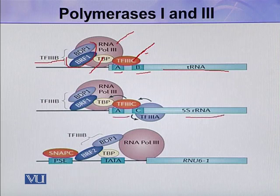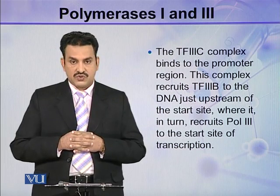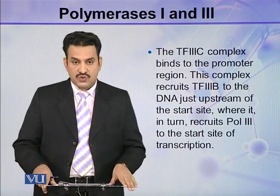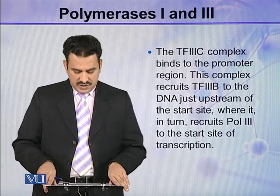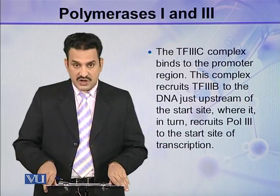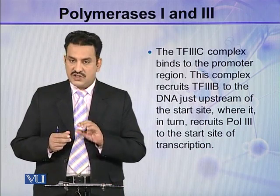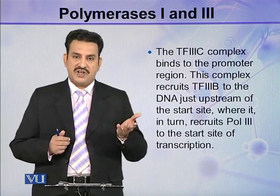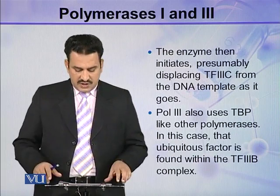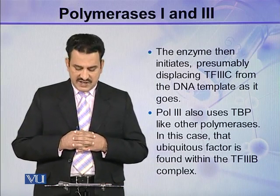In the case of the 5S rRNA gene, the promoter contains box A and box C, while in some other cases a TATA box and PSE box are also present. The TF3C complex binds to the promoter region; this complex recruits TF3B to the DNA just upstream of the start site, which in turn recruits polymerase 3 to the start site of transcription. The enzyme then initiates transcription, presumably displacing TF3C from the DNA template as it goes.